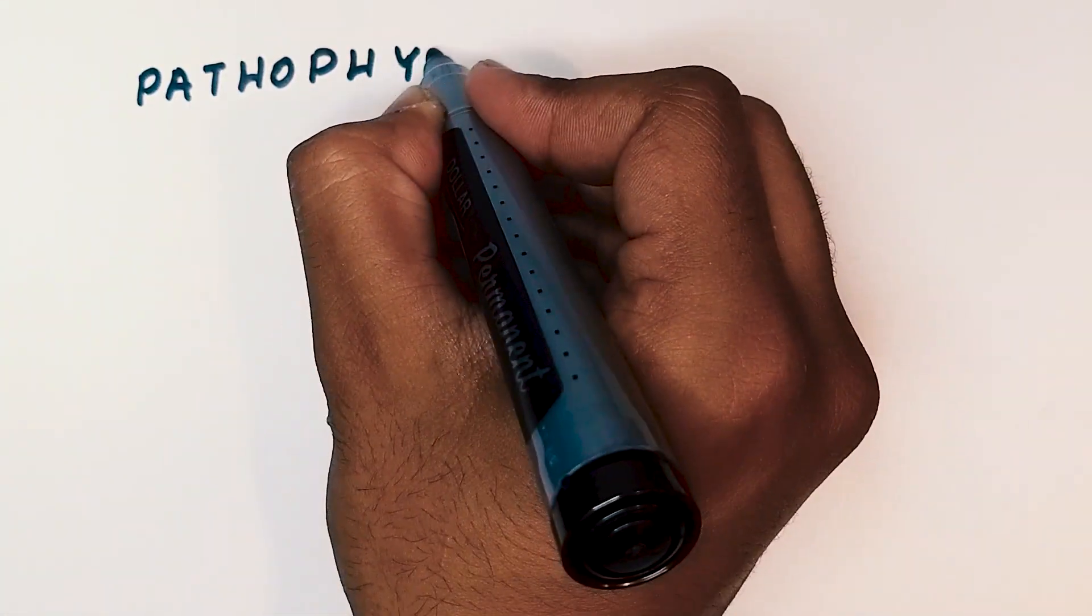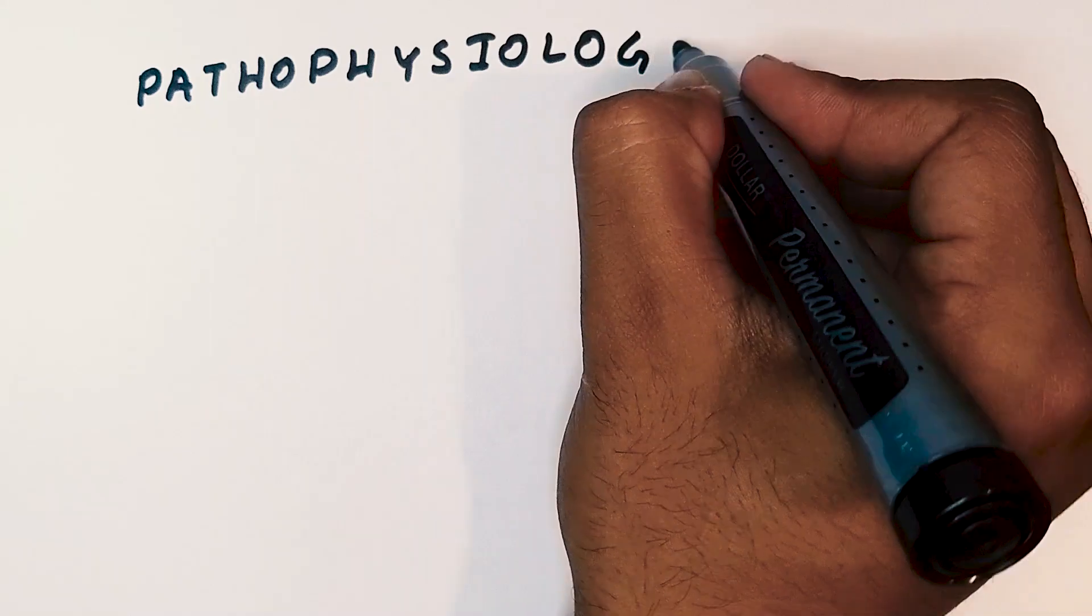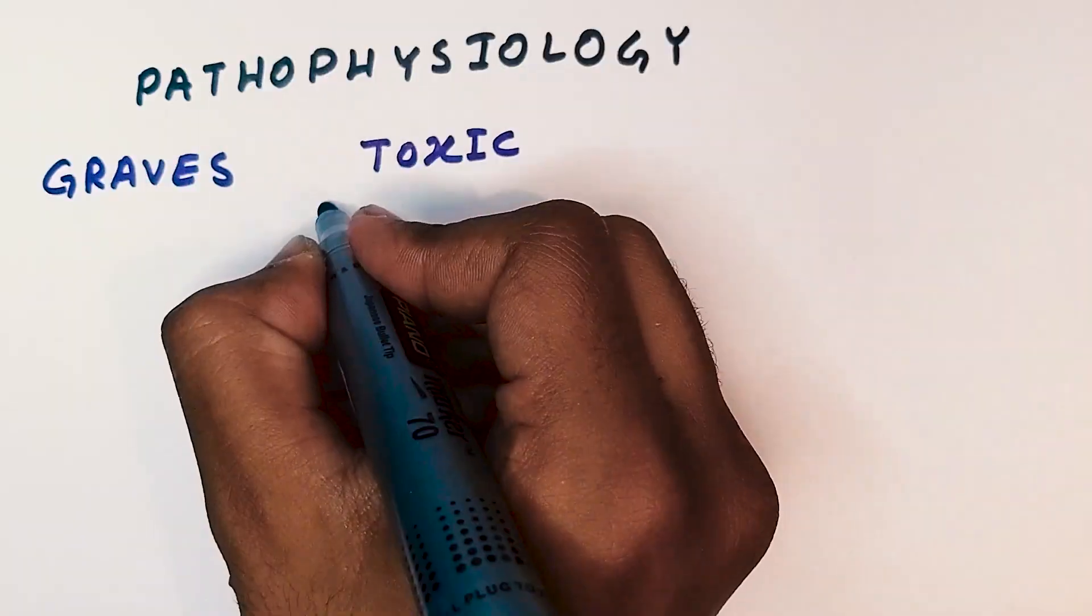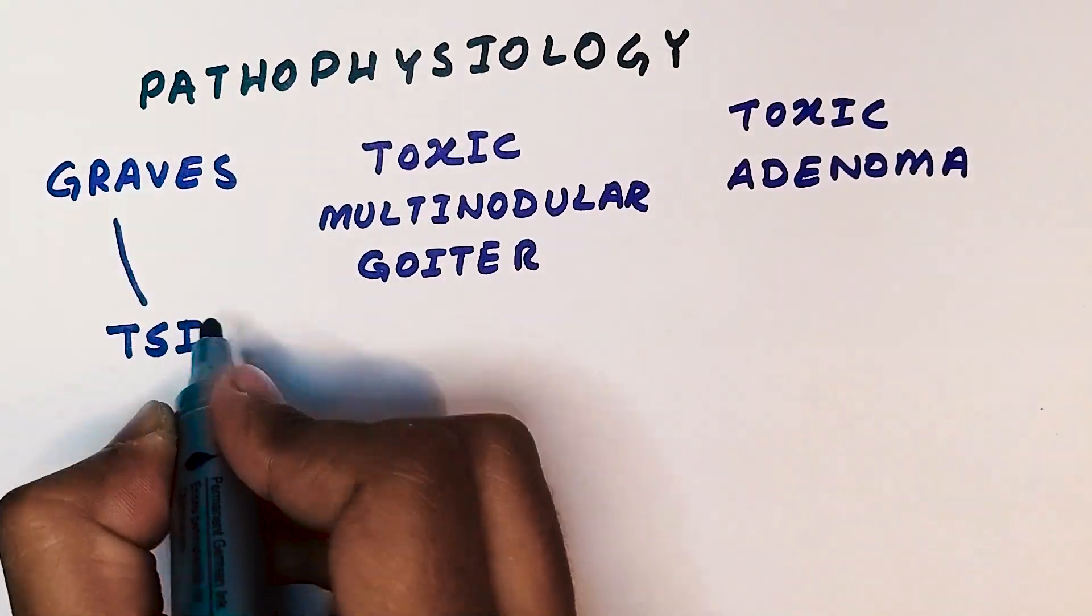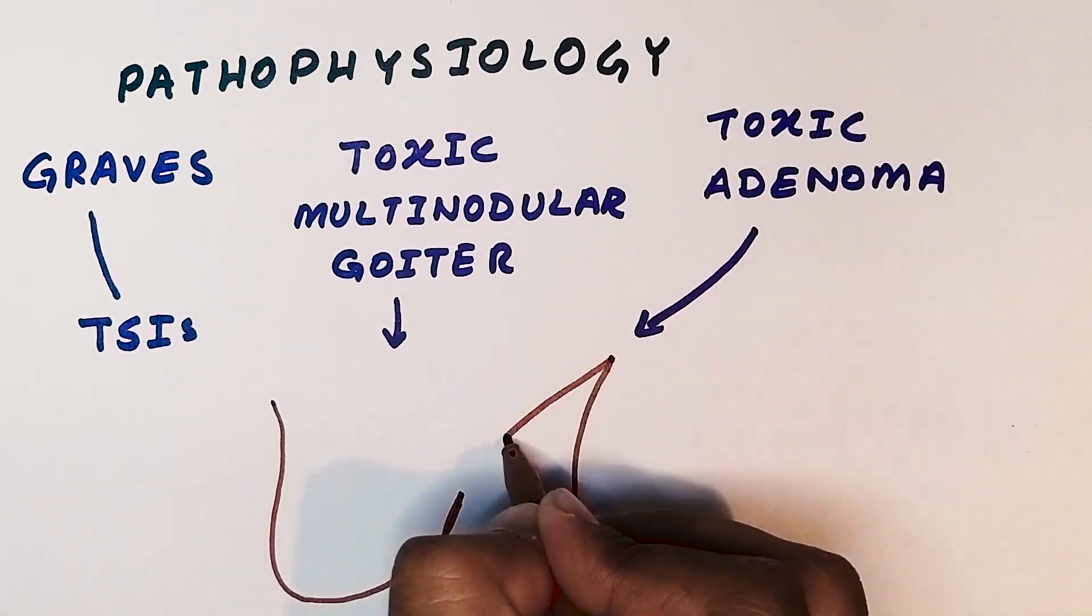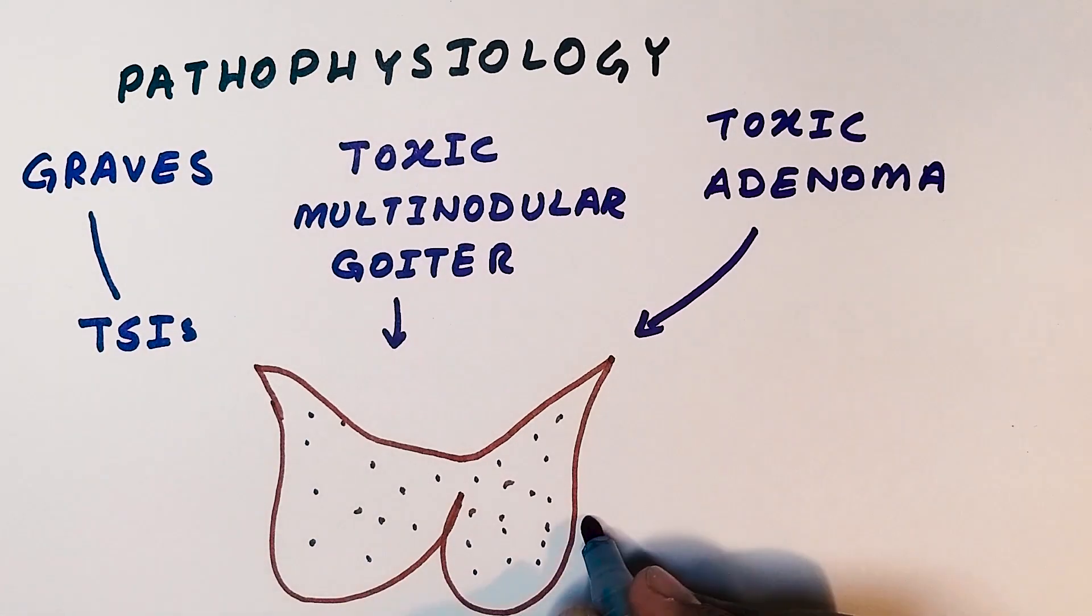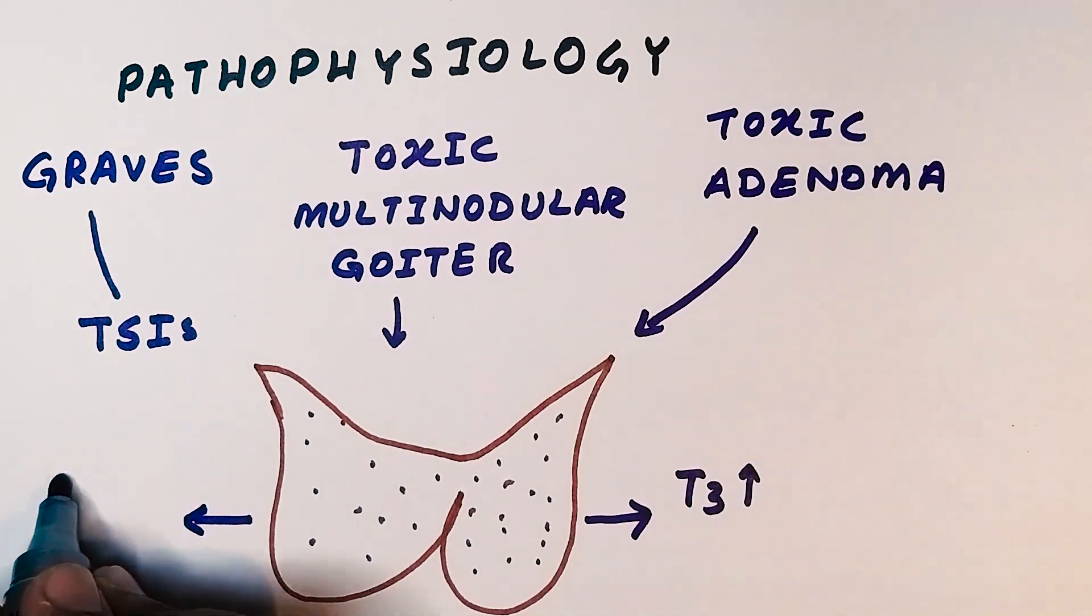In the pathophysiology, hyperthyroidism can be caused by various factors including Graves disease, toxic multinodular goiter, and toxic adenoma of the pituitary gland, due to which we see an increased synthesis and release of thyroid hormones, specifically T3 and T4 from the thyroid gland.